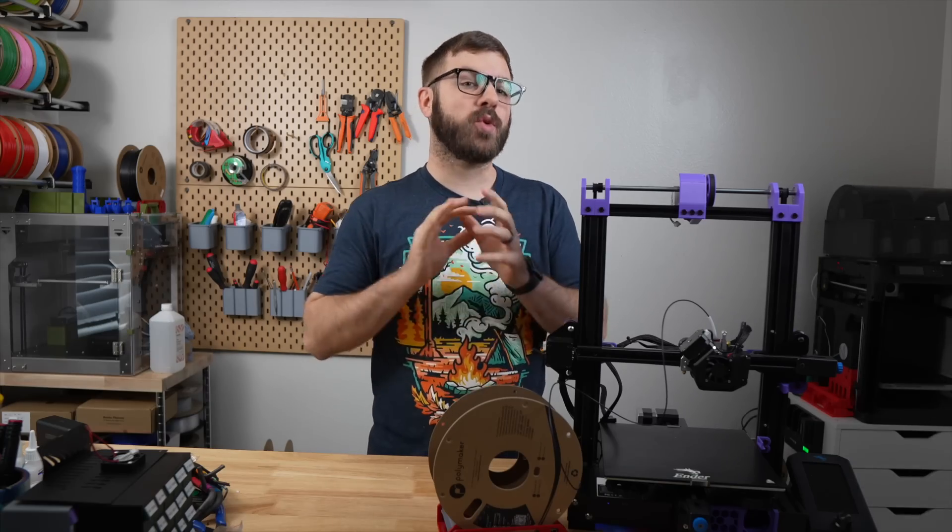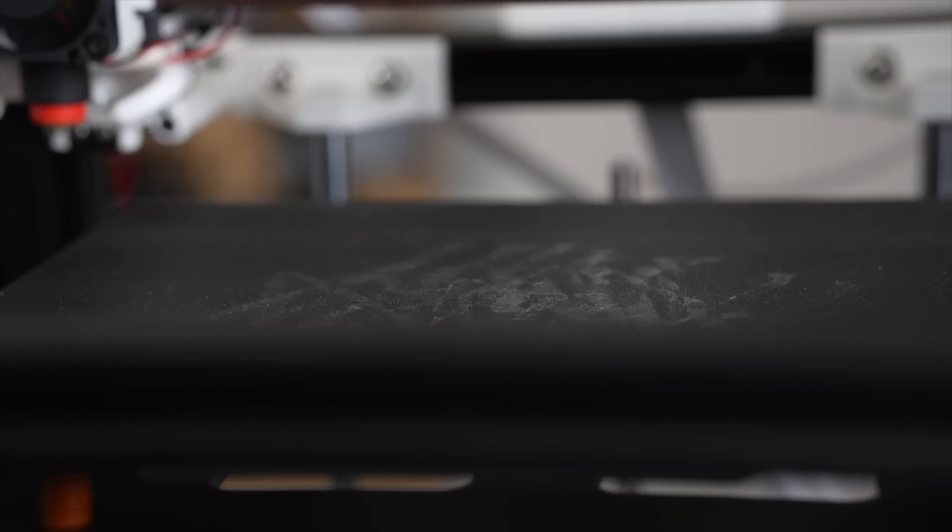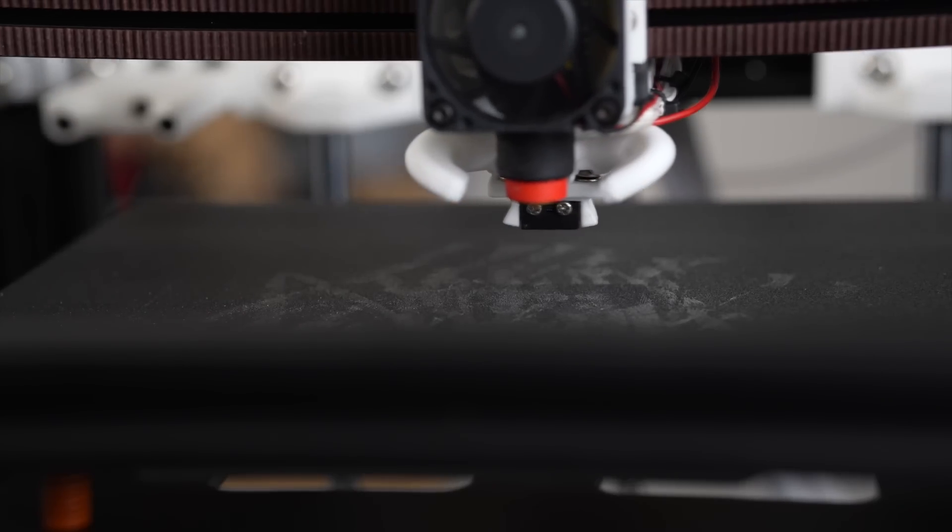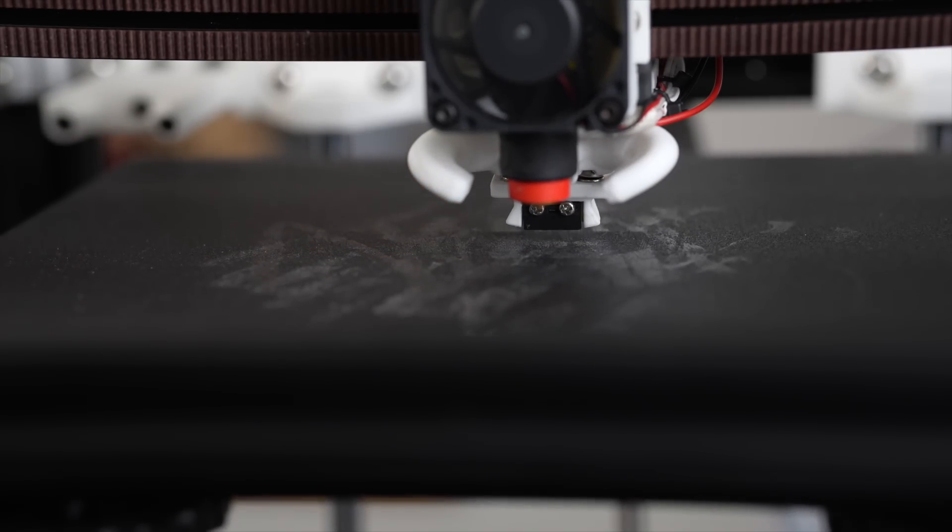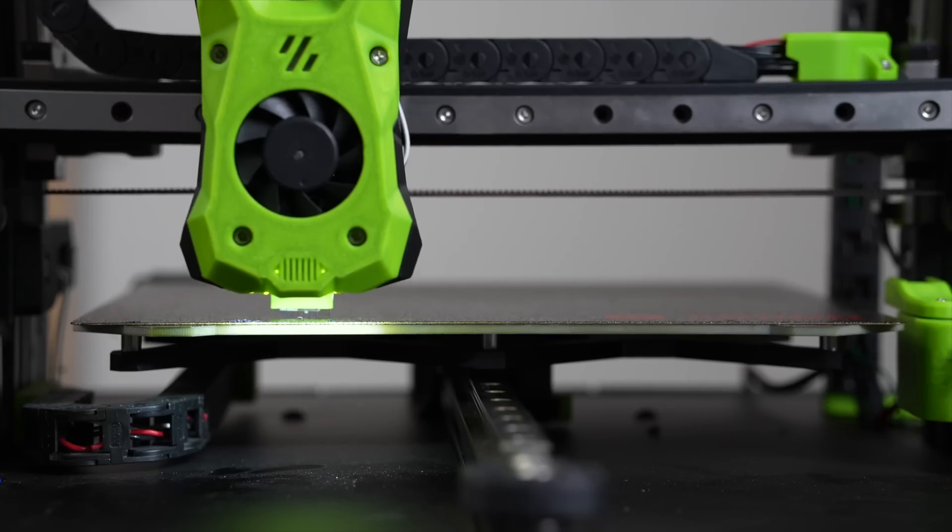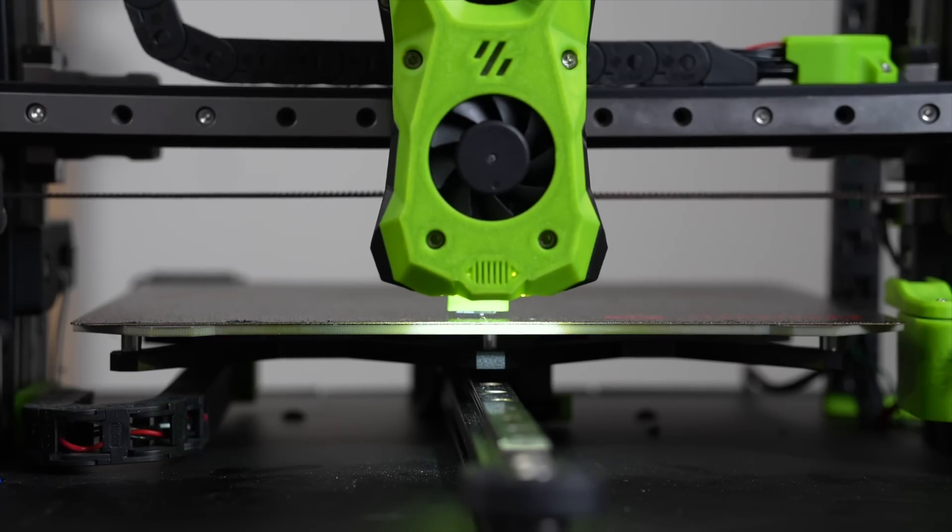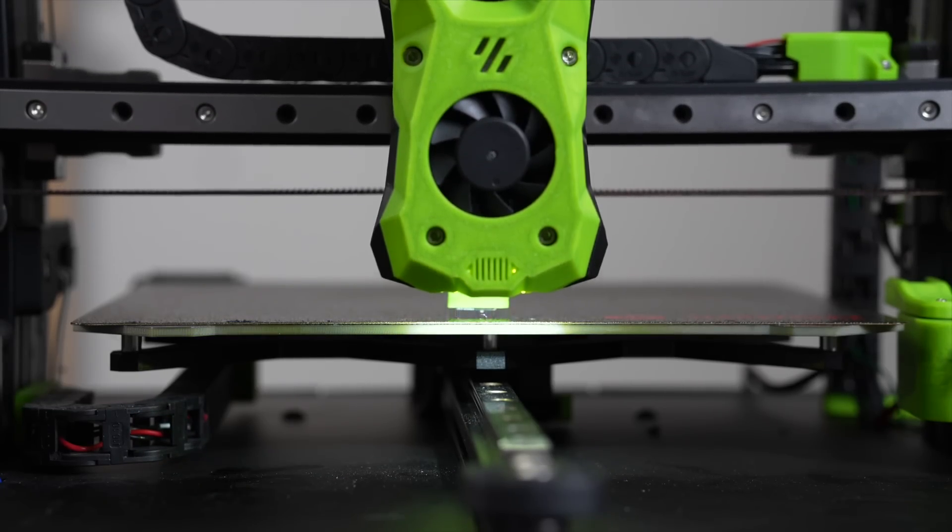For those not familiar, let's quickly touch on the what. The Clicky Probe is an automatic bed leveling probe that uses a micro switch and magnets to dock and attach the probe. It's precise, repeatable, inexpensive, and can be adapted to just about any printer.